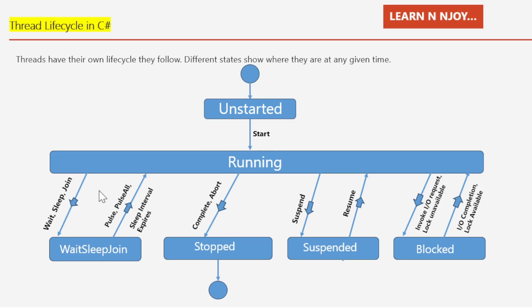If the thread encounters a situation where it needs to wait, sleep, or join another thread, its status changes to WaitSleepJoin — like pressing pause in the middle of a race. It can be brought back to the running state if specific methods like Pulse or PulseAll are applied, or if its sleep time expires.